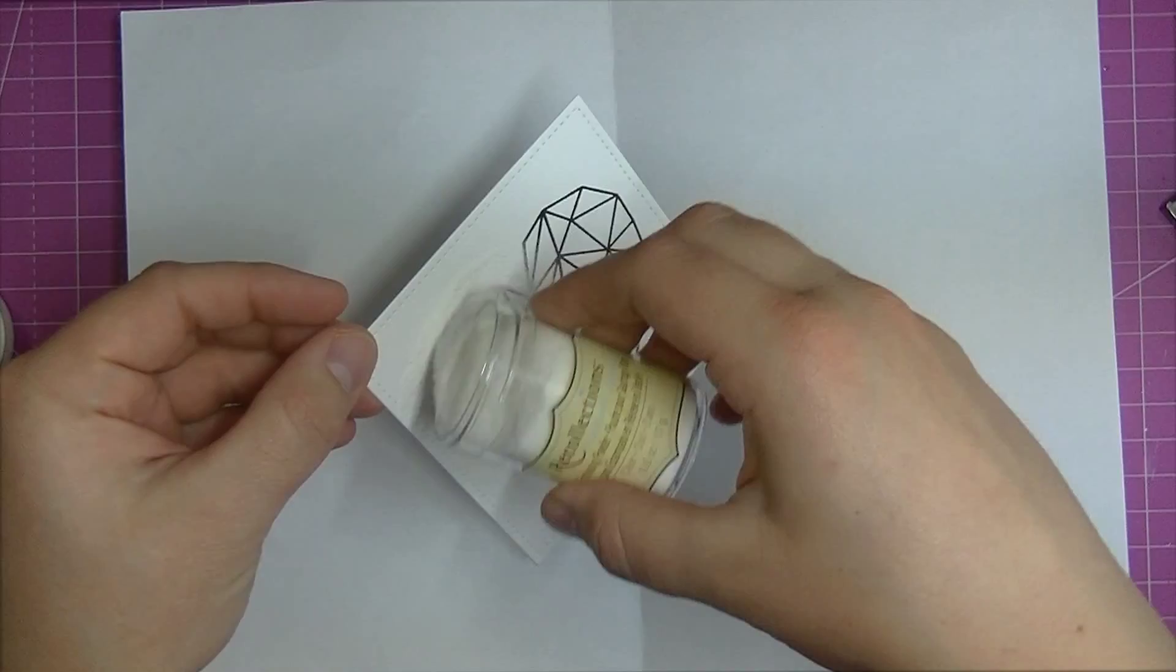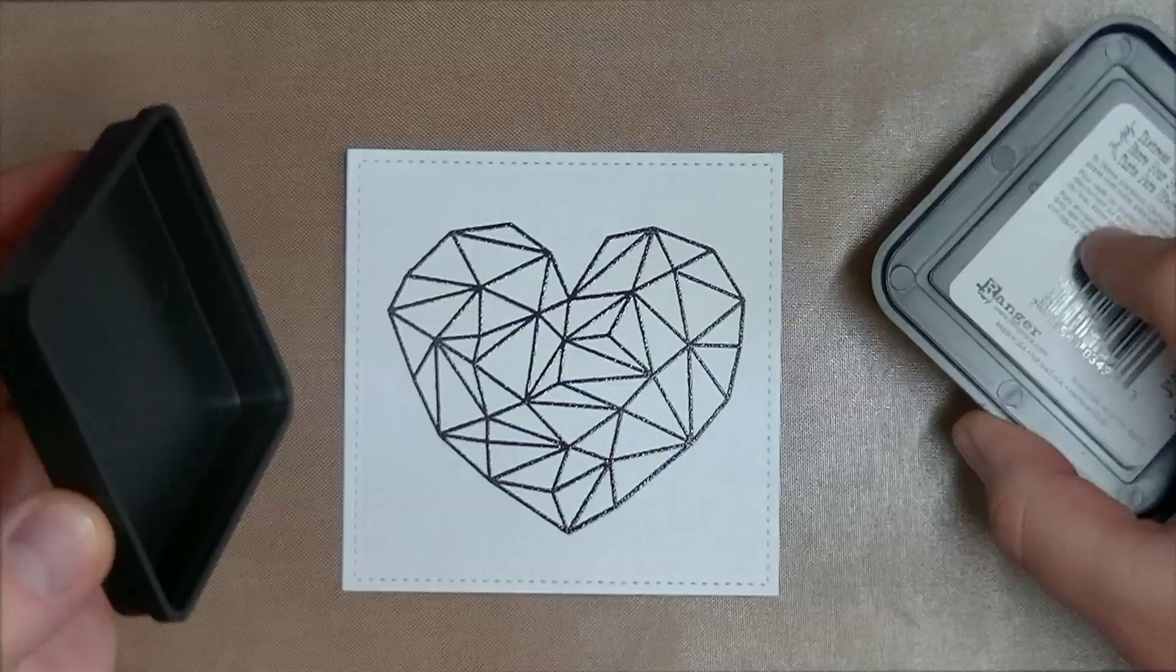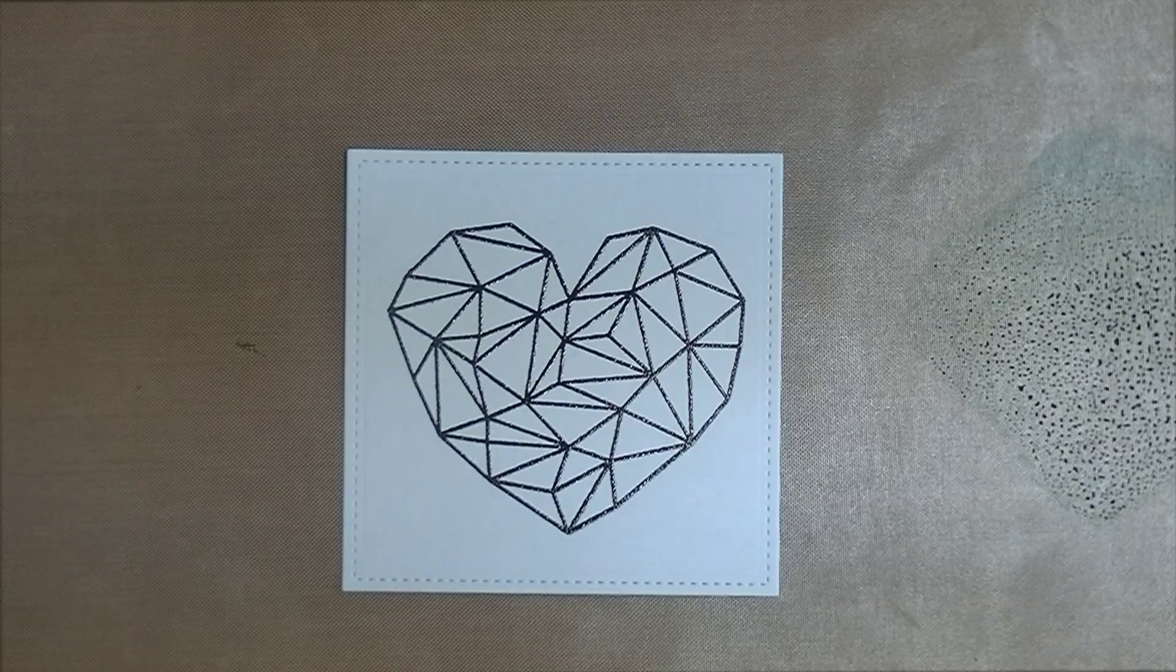Just getting that pressed on there, making sure I have a clean impression. Then I'm sprinkling clear embossing powder on that, shaking off the excess and heat setting it.